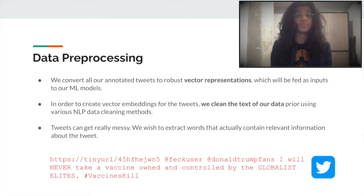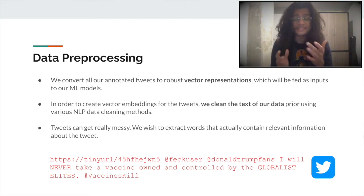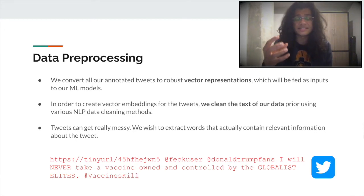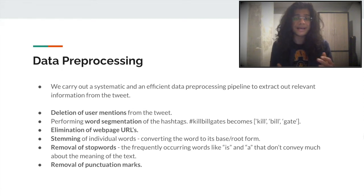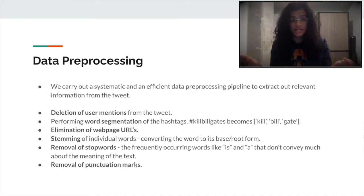Next, we aim to pre-process this data so we can get robust vector representations that can easily be fed into our machine learning models. In order to do that, we first need to clean the text of our data. For instance, if you look at this tweet at the bottom of the slide, we have a URL and some user mentions, both of which don't really convey any relevant information about the tweet. We perform a systematic and efficient data pre-processing pipeline, including word segmentation which breaks down hashtags into their constituent words.